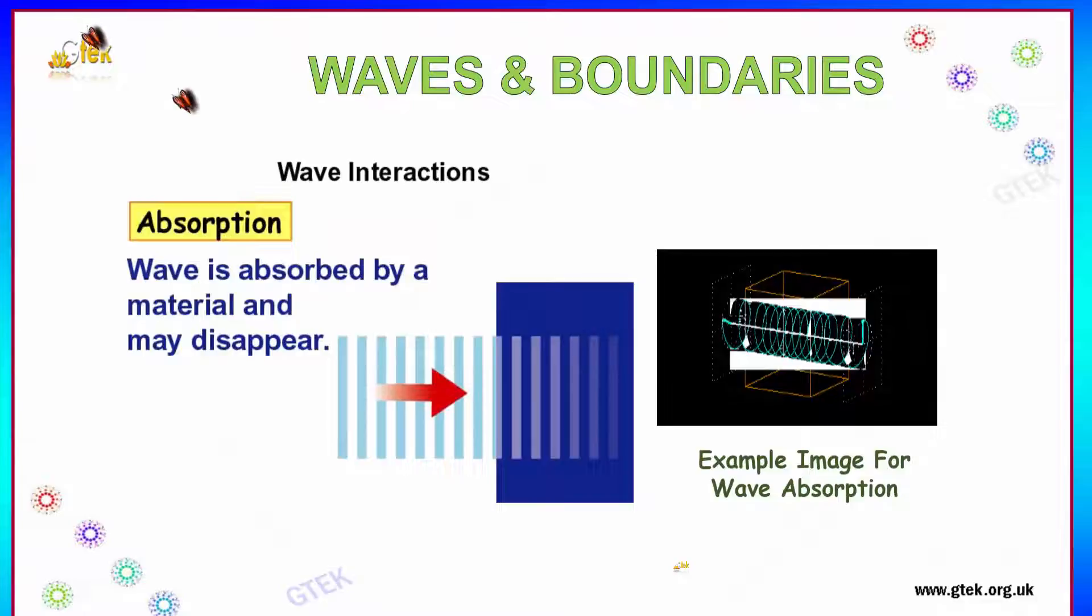Absorption will also tend to have wave interaction. Wave is absorbed by a material and it will disappear. If you see over here, the waves are there and this is the region of the material. You can see in dark blue color. The wave is absorbing a material and it is making the wave to disappear. You can see the traces of how the wave is getting to be dispersed. That is disappearing.